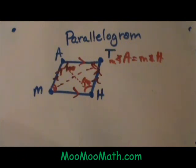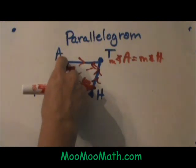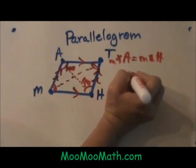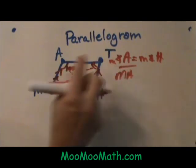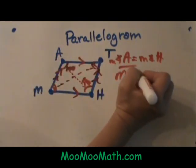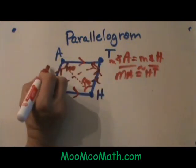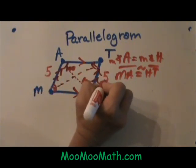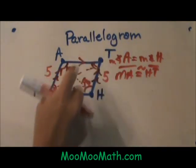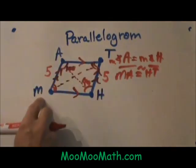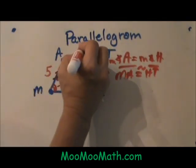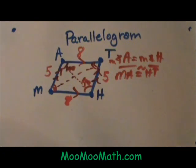The next property is that the opposite sides are congruent. This side MA is congruent or the same length as HT. So if this side is 5, this side is 5. And the same with AT and MH. So let's say this is 8, then this opposite side would be 8 also. So opposite sides are congruent.